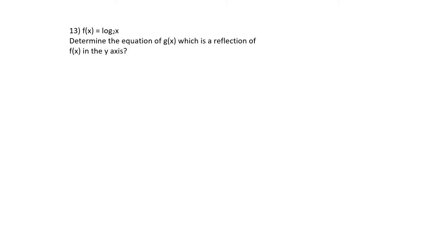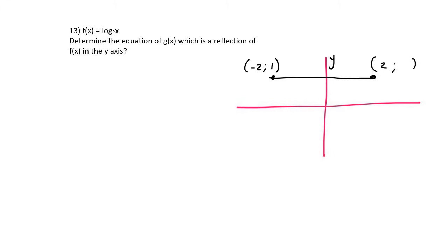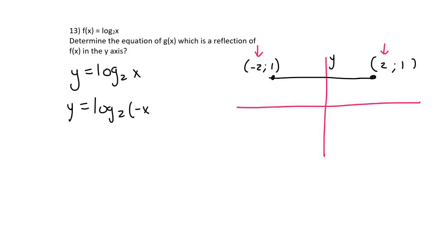To understand reflecting in the y-axis: a point (−2, 1) reflected over the y-axis becomes (2, 1). The x-value changes sign. So for y = log₂(x), reflecting in the y-axis means we replace x with −x. We get y = log₂(−x). This cannot be simplified further, so g(x) = log₂(−x).